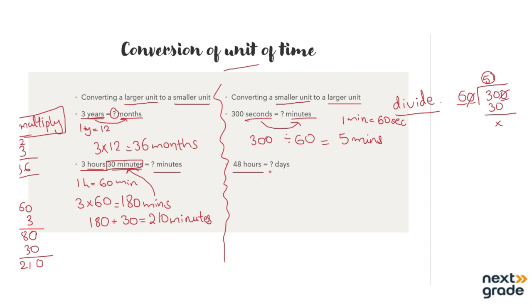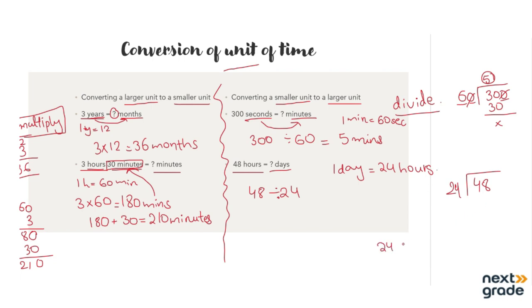Next question: convert 48 hours into days. One day has 24 hours. So we divide 48 by 24. If you don't know the 24 times table, simply add 24 plus 24, which gives 48 — meaning 2 times 24 is 48. So the answer is 2 days in 48 hours.